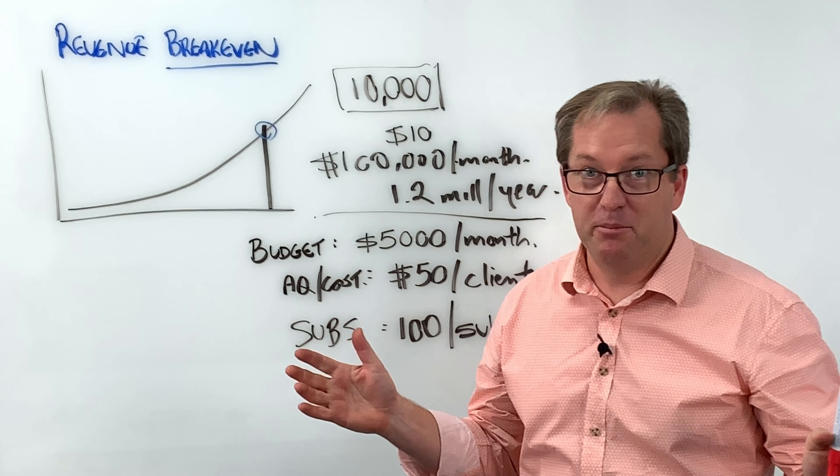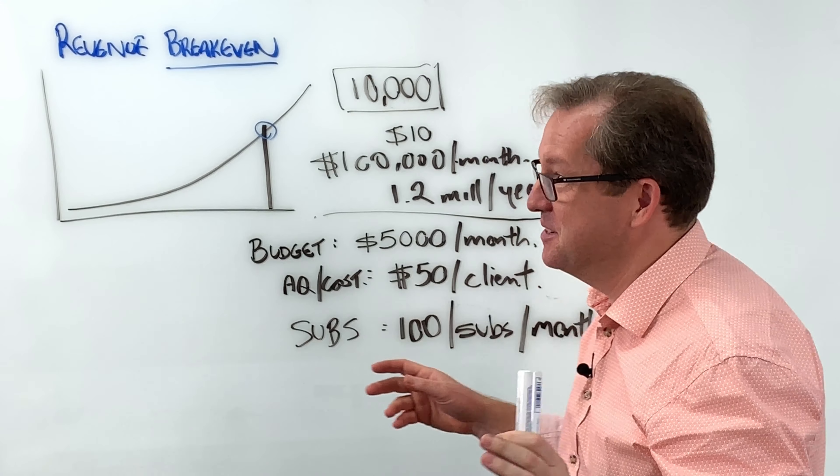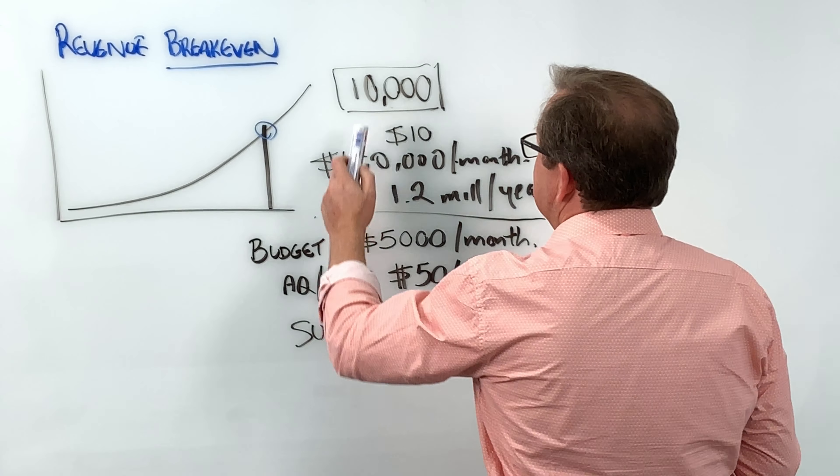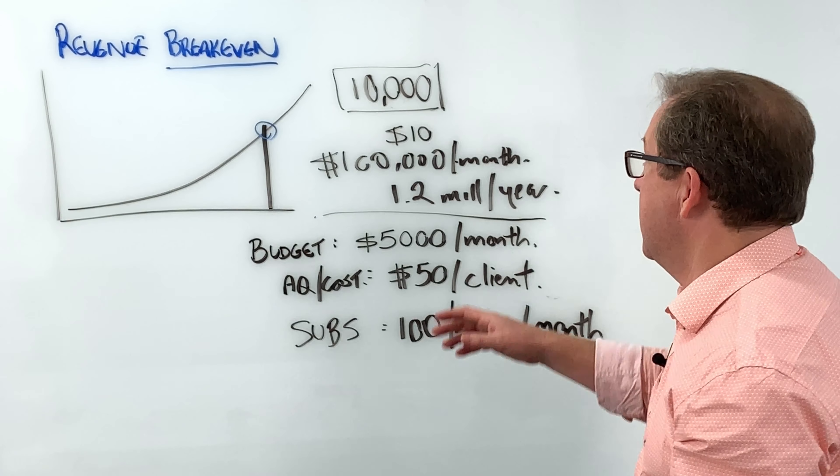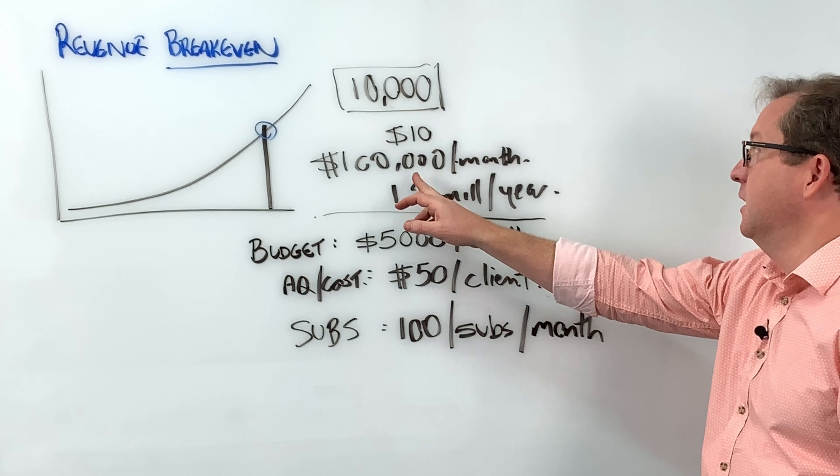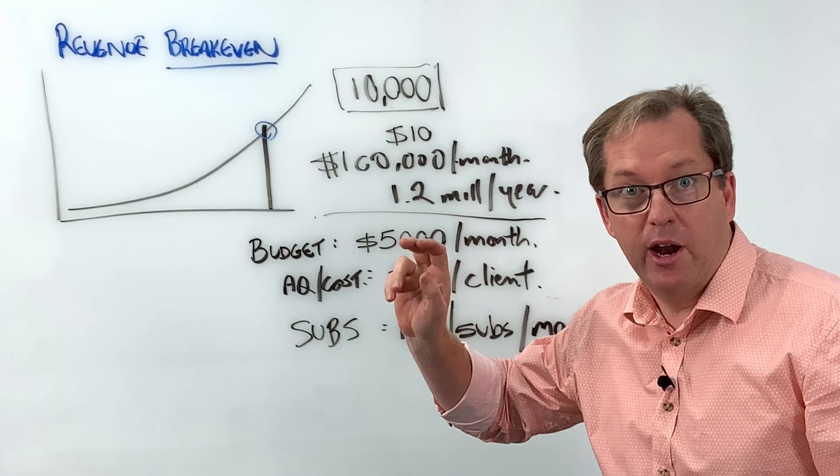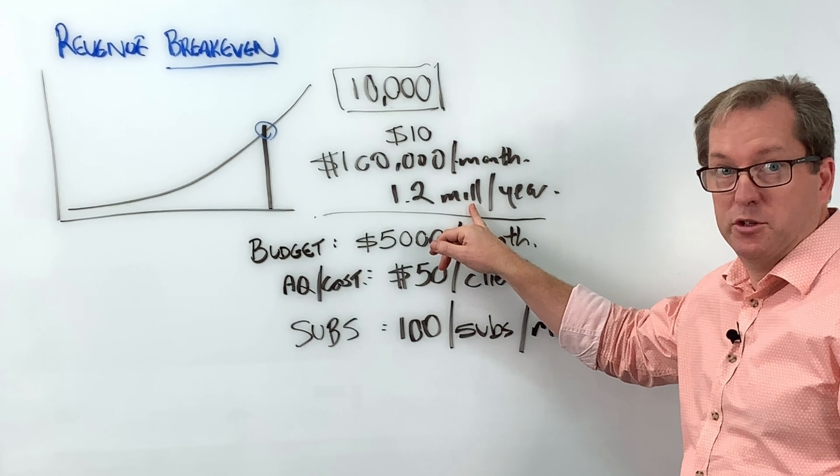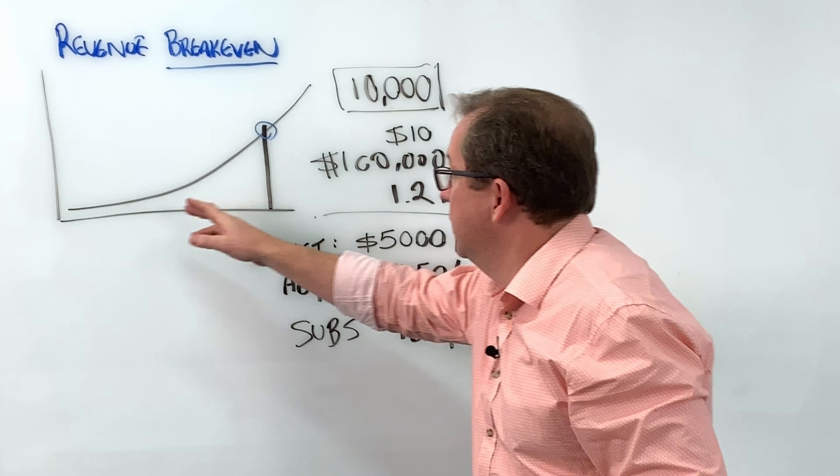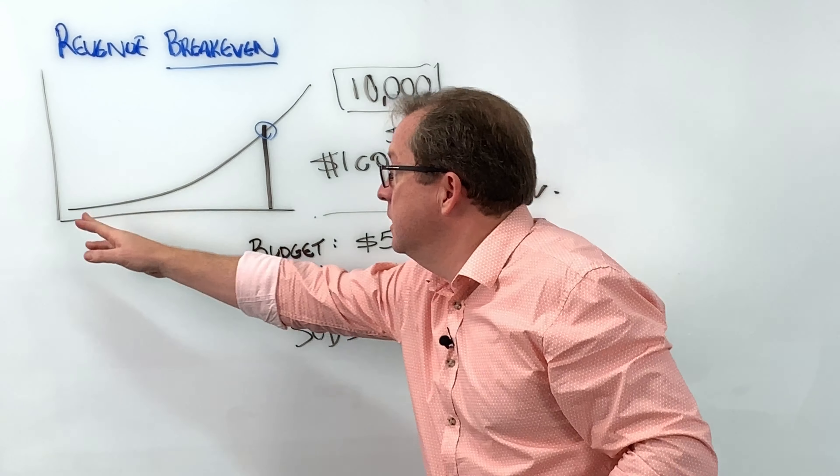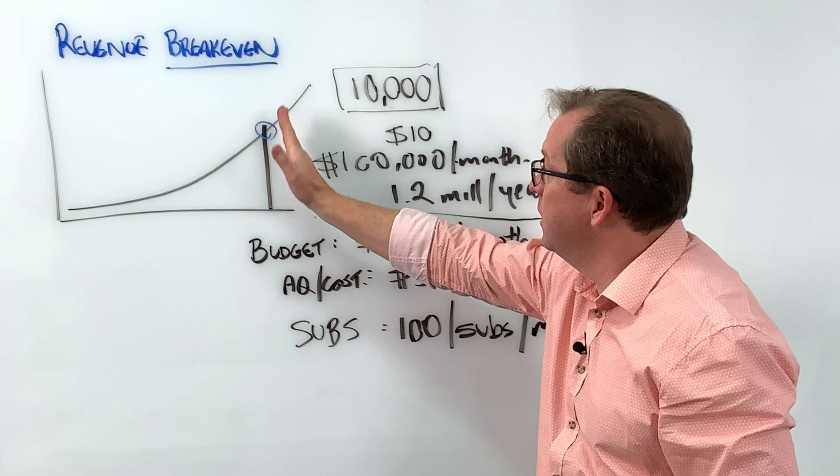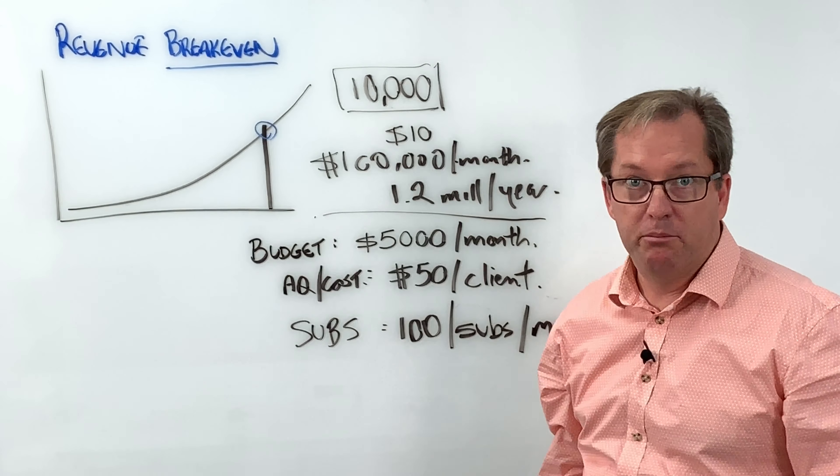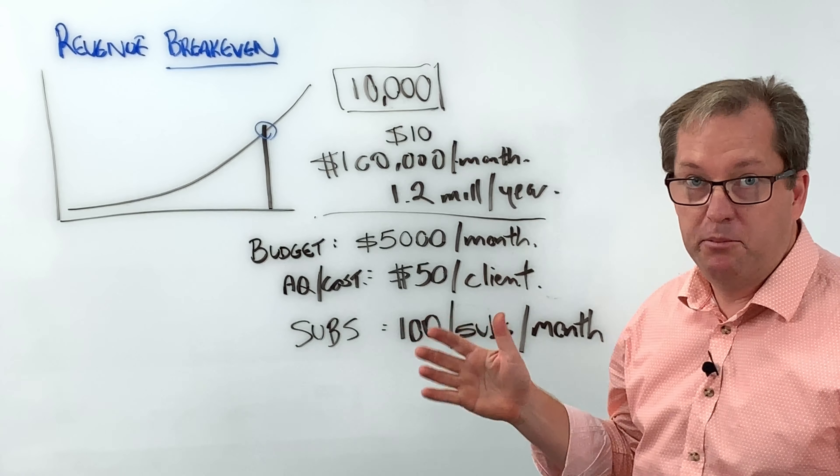Very simple, let's keep this as simple as possible, this is the internet after all. Say my magic number is 10,000 subscribers paying $10 a month which equates to $100,000 a month or 1.2 million revenue a year. This graph represents the growth in those customers or subscribers over a period of time and here's our break even point. Sounds simple right?